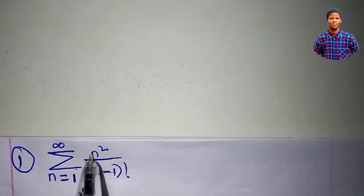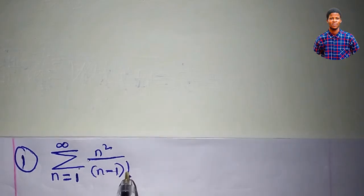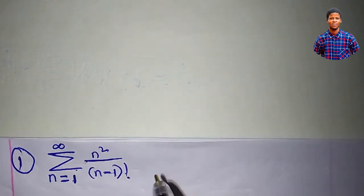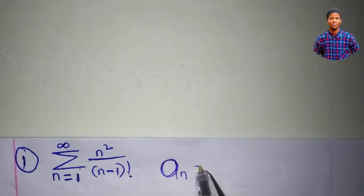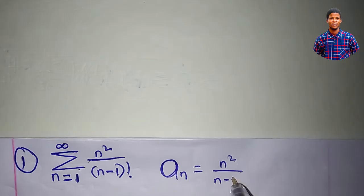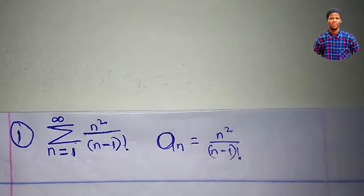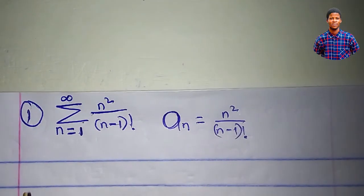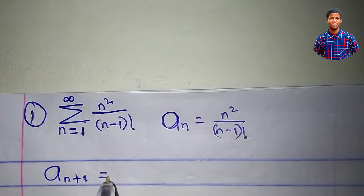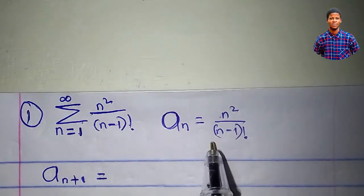Consider the summation of n squared all over n minus 1 factorial, from n equal to 1 to infinity. Our a sub n is equal to n squared all over n minus 1 factorial. What will be a sub n plus 1? In place of n, we write n plus 1.